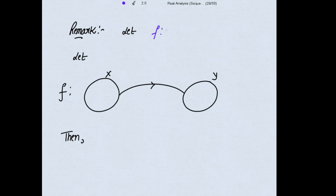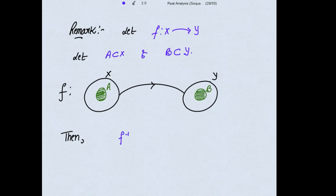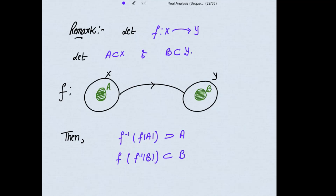Let f be a mapping from X to Y. Let A be a subset of X and B be a subset of Y. Then if we take f inverse of f(A), this will contain the set A; and if we take f of f inverse(B), then it becomes a subset of B. These two results are very important — please remember them.